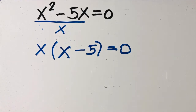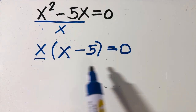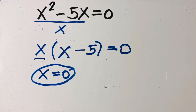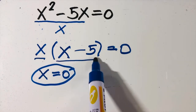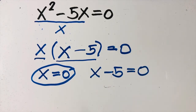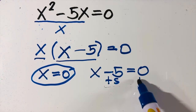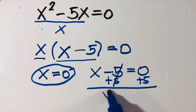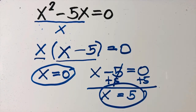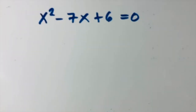We use the zero product property — set each factor equal to zero. The first factor is x equals zero, so we don't need to solve further. The second factor: x minus 5 equals zero, add 5 to both sides, so x equals 5. Therefore the solutions are x equals 0 and x equals 5.